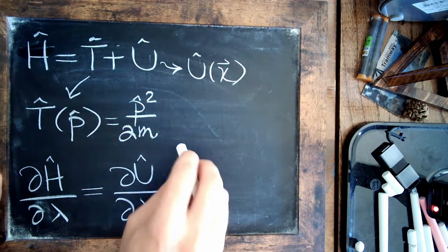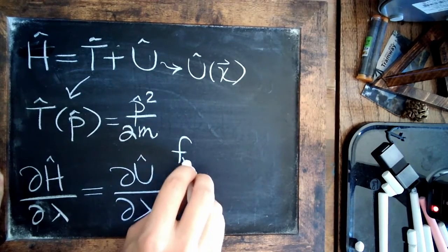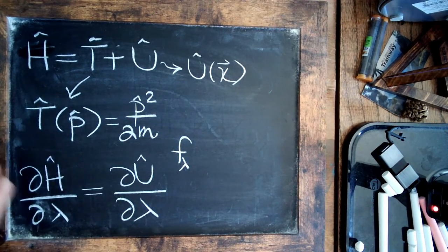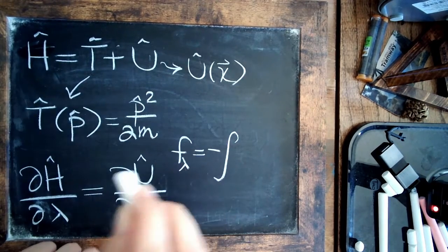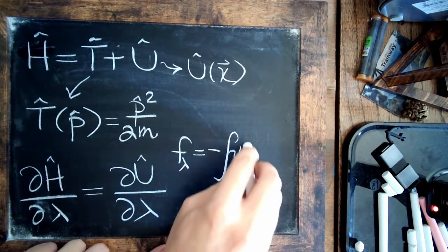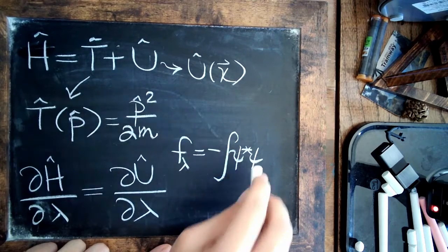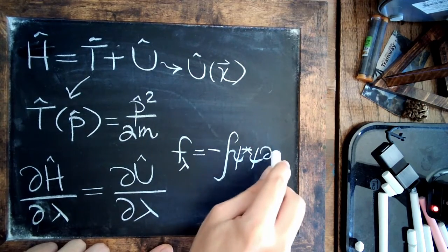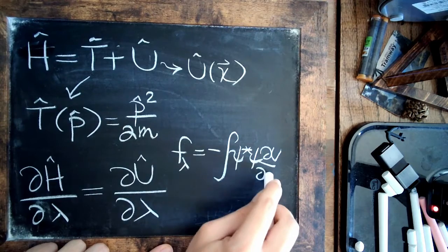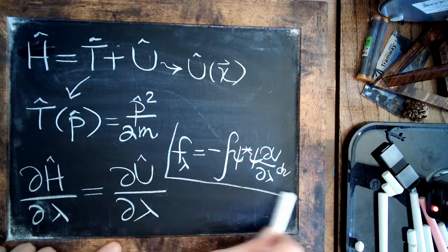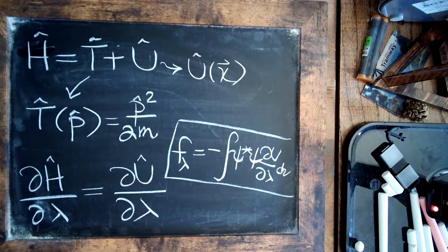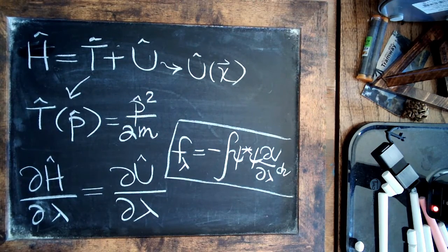So we can actually write that the force for a typical atomic system actually just ends up being this: negative sign, psi star, psi, derivative of the potential, and then integrate it over volume. So that's a pretty straightforward way to perform these calculations.